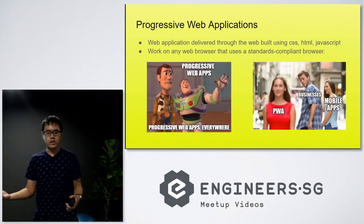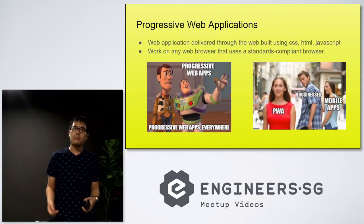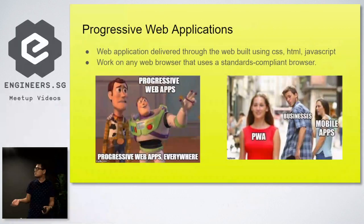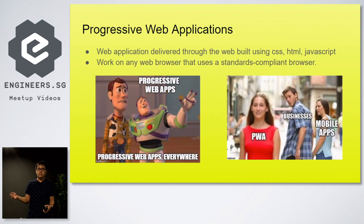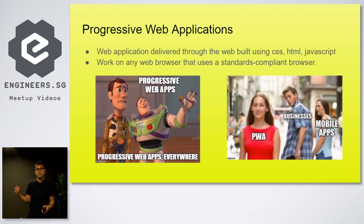So what exactly is a progressive web application? A progressive web application is a tool designed by Google. It's a web application you can build using CSS, HTML and JavaScript. It works on any web browser and it complies with the standards set by the W3C, the World Wide Web Consortium.